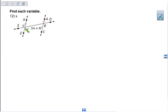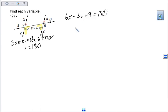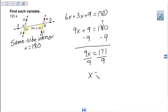And last up, we'll find the variable. And we have the same side interior angles because they're on the same side of the transversal and they're both inside of the two other lines. And we know that same side interior angles are supplementary. They add up to 180 degrees. So we're going to add 6x plus 3x plus 9 and set it equal to 180. Combine your like terms. So 9x plus 9 equals 180. Subtract 9 from both sides. And divide by 9. And when we divide by 9, we get 19.